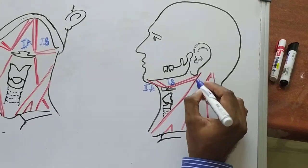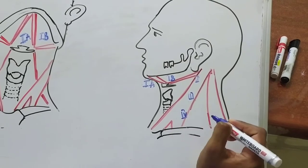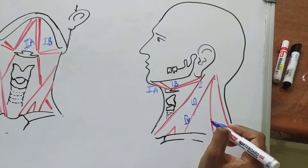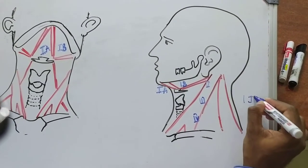Level 2, level 3, and level 4 are also called as the jugular group of lymph nodes. Why they are called jugular group of lymph nodes? Because they are closely related to the internal jugular vein.